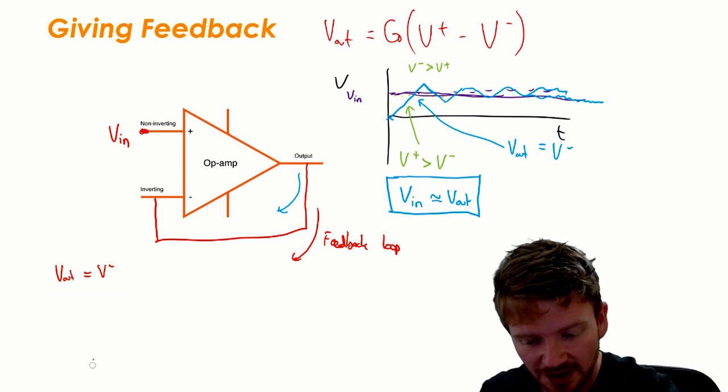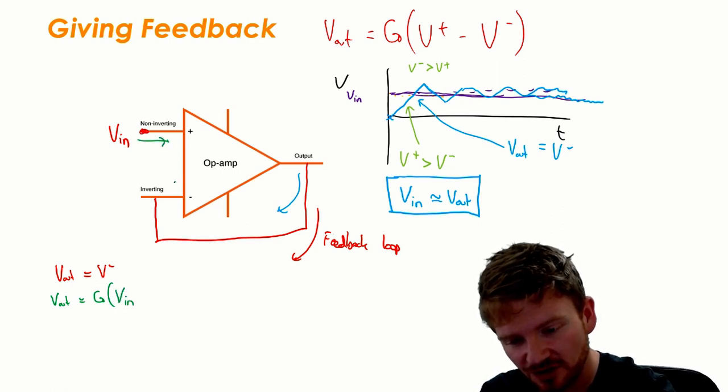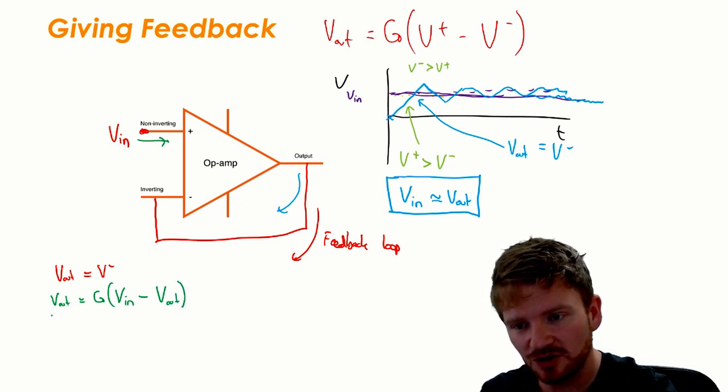So I can now rewrite my equation as this is the open loop gain equation. It is the gain multiplied by V in, because V in is connected to my non-inverting input, minus V out. And now it's a simple measure to multiply out that bracket so I can say V out is G V in minus G V out, and then I'm going to collect my terms.